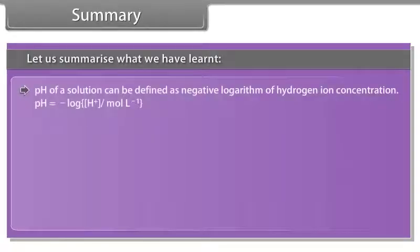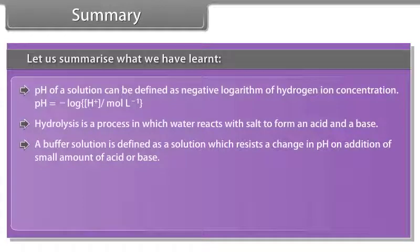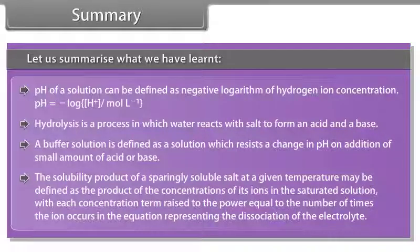pH of a solution is the negative logarithm of hydrogen ion concentration. Hydrolysis is a process in which water reacts with a salt to form an acid and a base. A buffer solution resists a change in pH on addition of a small amount of acid or base. The solubility product of a sparingly soluble salt is the product of concentrations of its ions in the saturated solution, each raised to the power equal to the number of times the ion occurs in the dissociation equation.